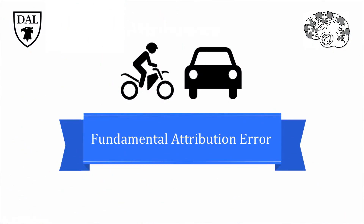How we attribute the causes of others' behavior colors how we perceive and ultimately judge them. It turns out that when we try to figure out others' intentions, we have a tendency to process information in a biased way, and sometimes this leads us to make mistakes. This is so common that it's called the fundamental attribution error, and it'll be the focus of this tricky topic.